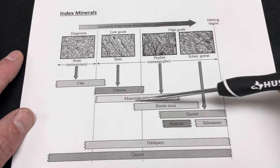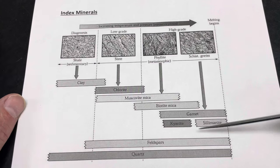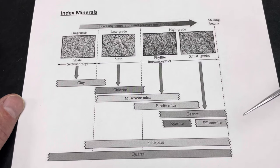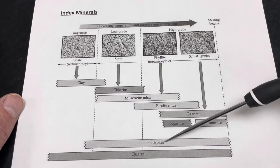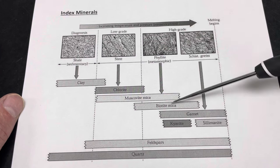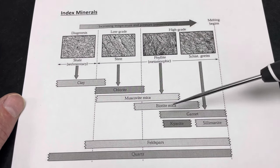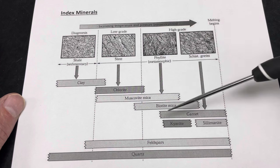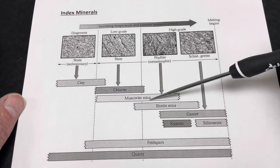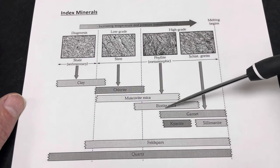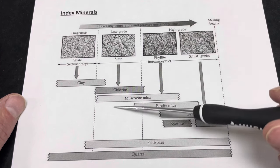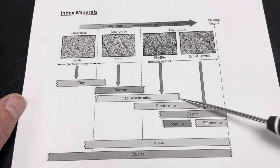Some of these you might be familiar with, like quartz, the feldspars, biotite, muscovite — those are all minerals you may be familiar with, along with a few others. What this is showing us is that certain minerals — not every mineral, but many minerals — have a zone of temperatures in which they're stable.